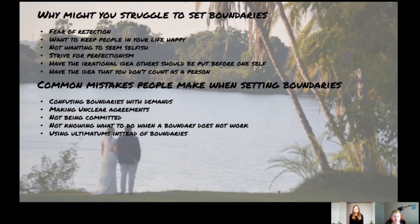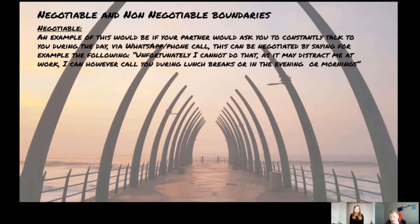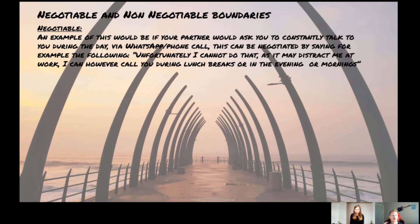Let's step into examples of negotiable and non-negotiable boundaries. A negotiable boundary example: when your partner asks you to constantly talk on WhatsApp or gives you flack for not responding in a timely manner when you're at work. You could negotiate by saying: 'Unfortunately I can't do that — it might distract me at work. However, I can call you during lunch, before work, in the evening after work, or whenever I find a gap.' That would be a good example of a negotiable boundary.